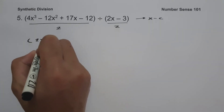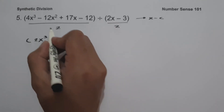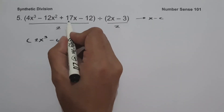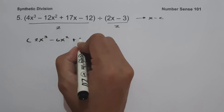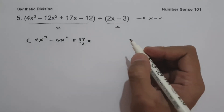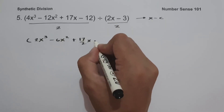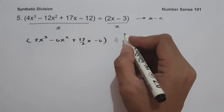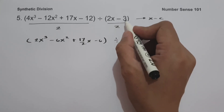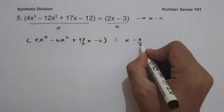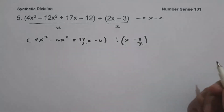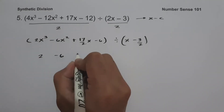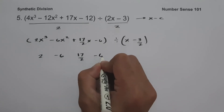So 4x cubed divided by 2 is 2x cubed. Negative 12x squared divided by 2 is negative 6x squared. 17x divided by 2 is seventeen-halves x. Negative 12 divided by 2 is negative 6. On the divisor side, 2x divided by 2 is x, and negative 3 divided by 2 is negative three-halves. The coefficients of the dividend are 2, negative 6, seventeen-halves, and negative 6.